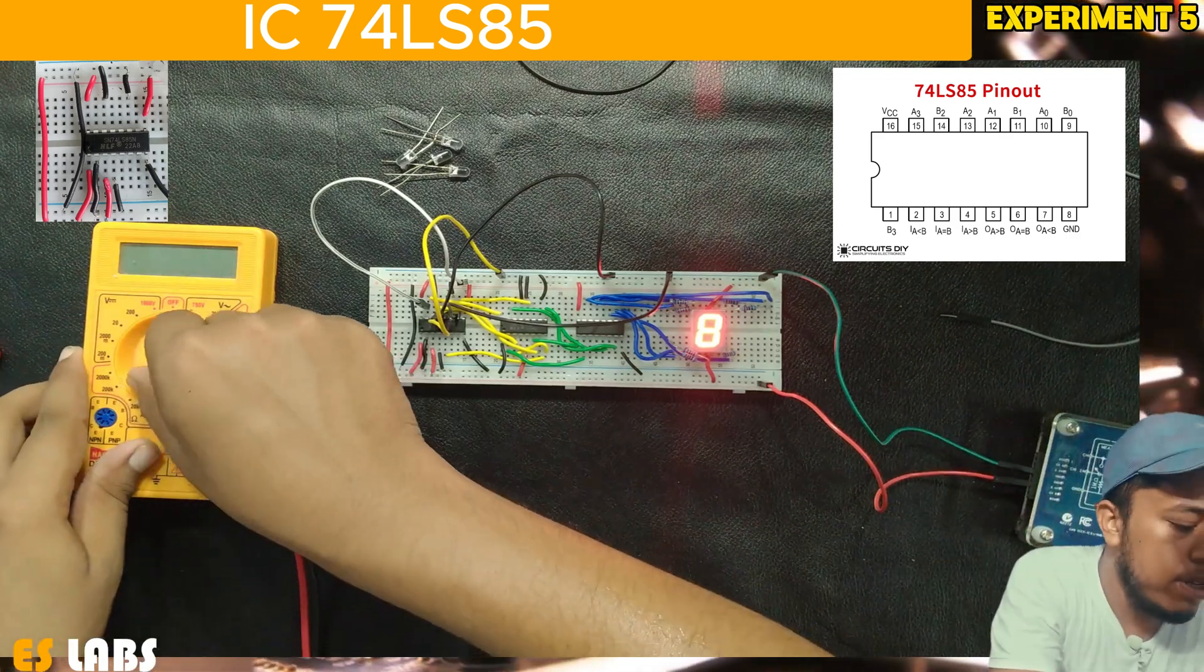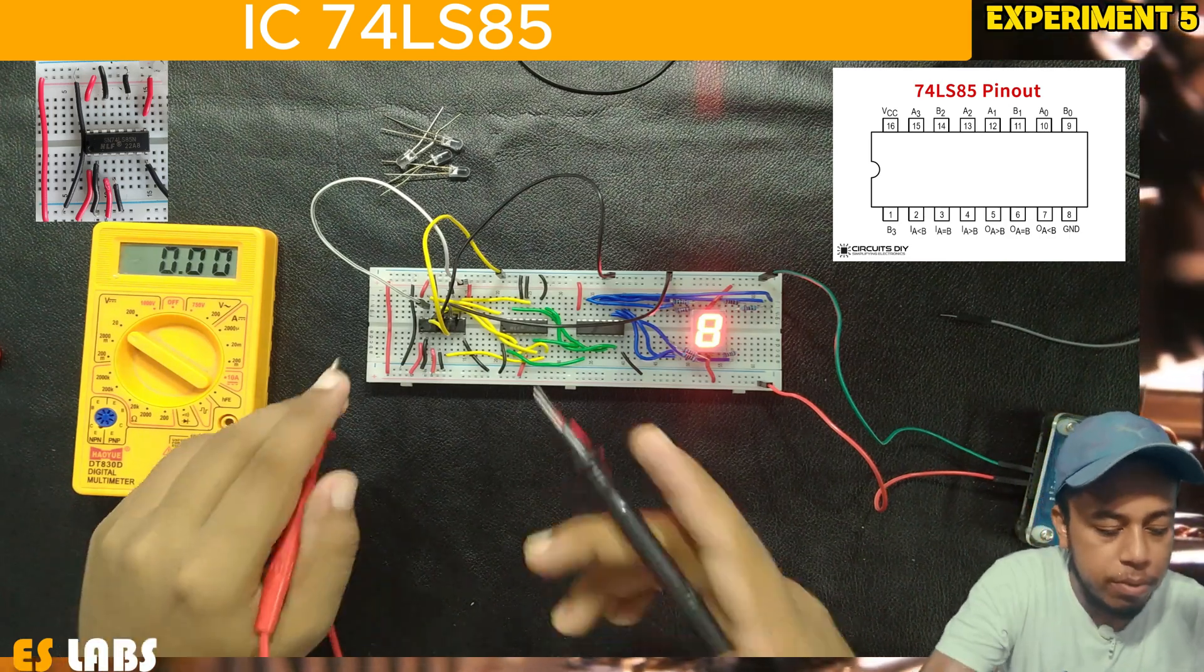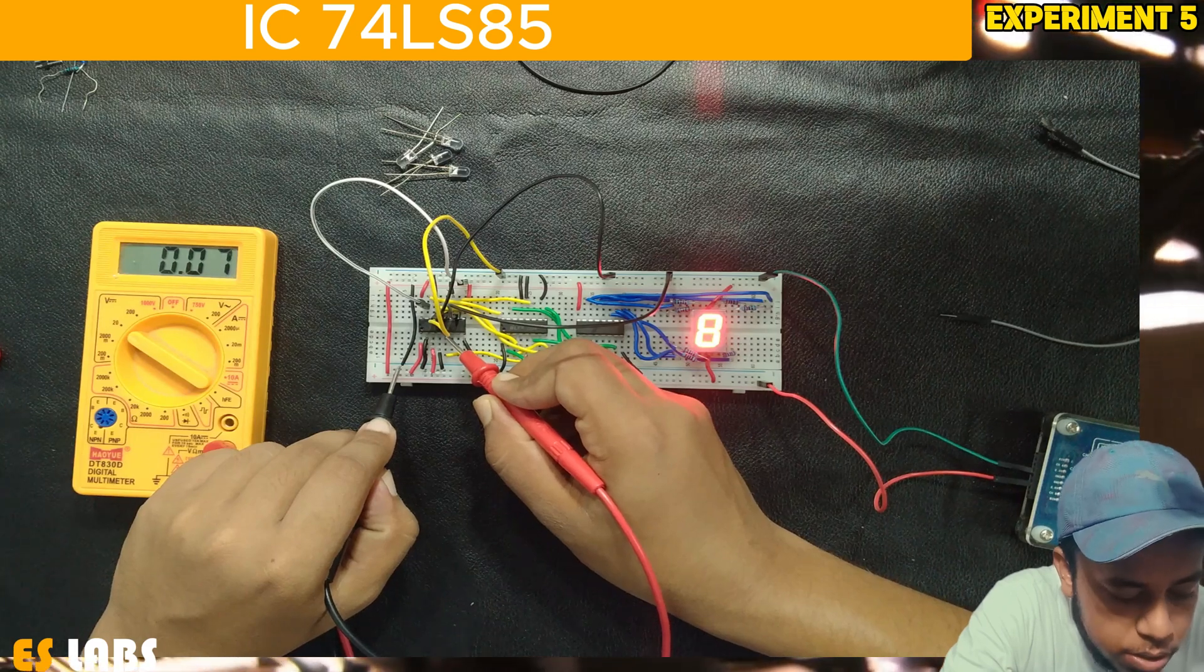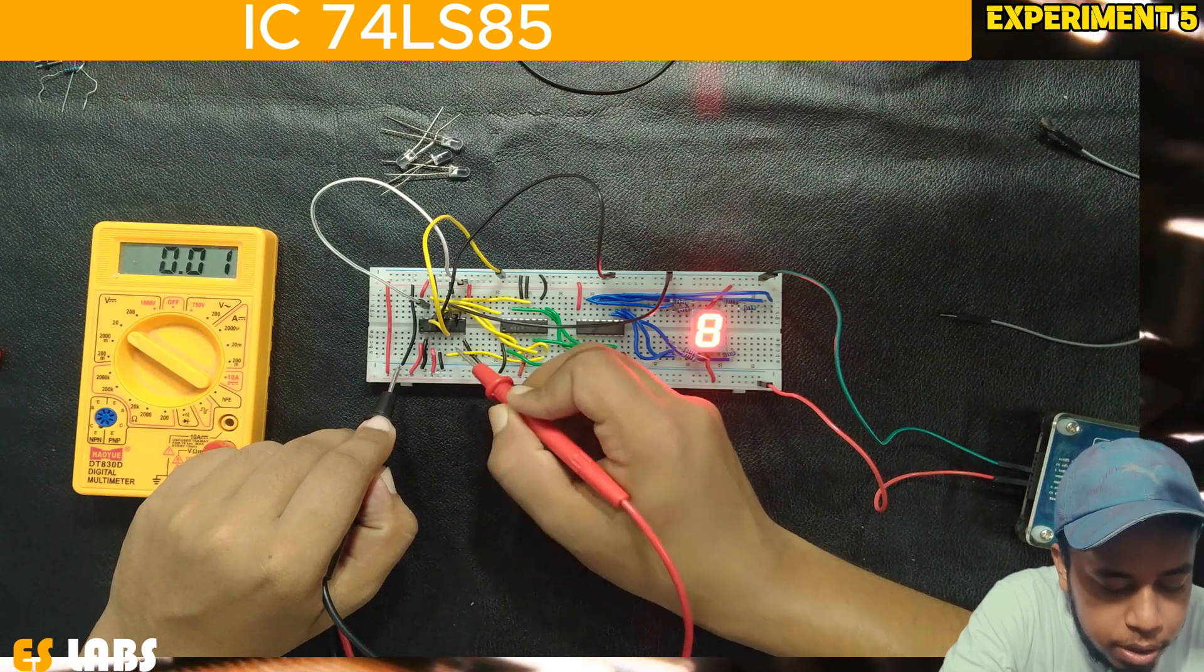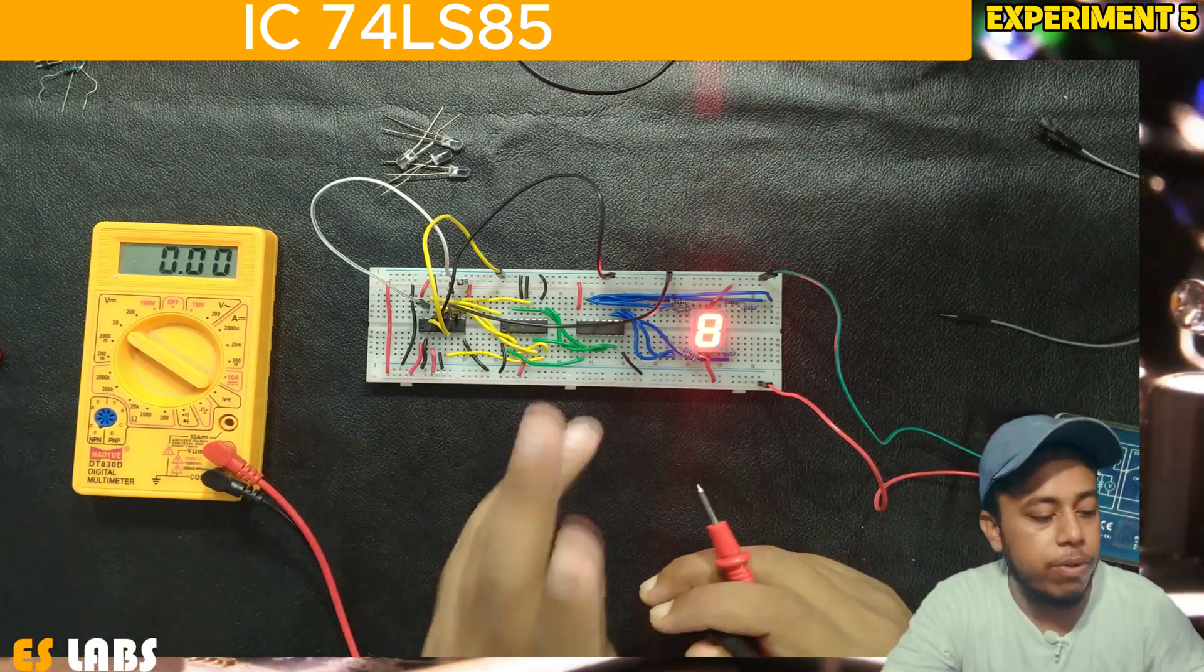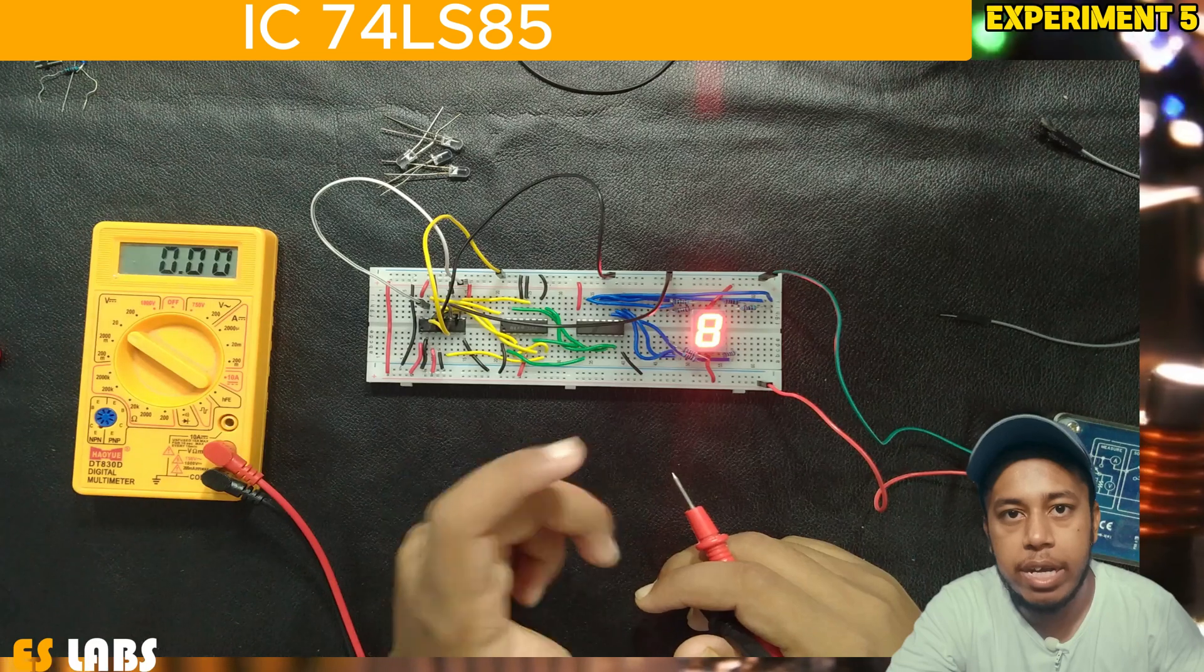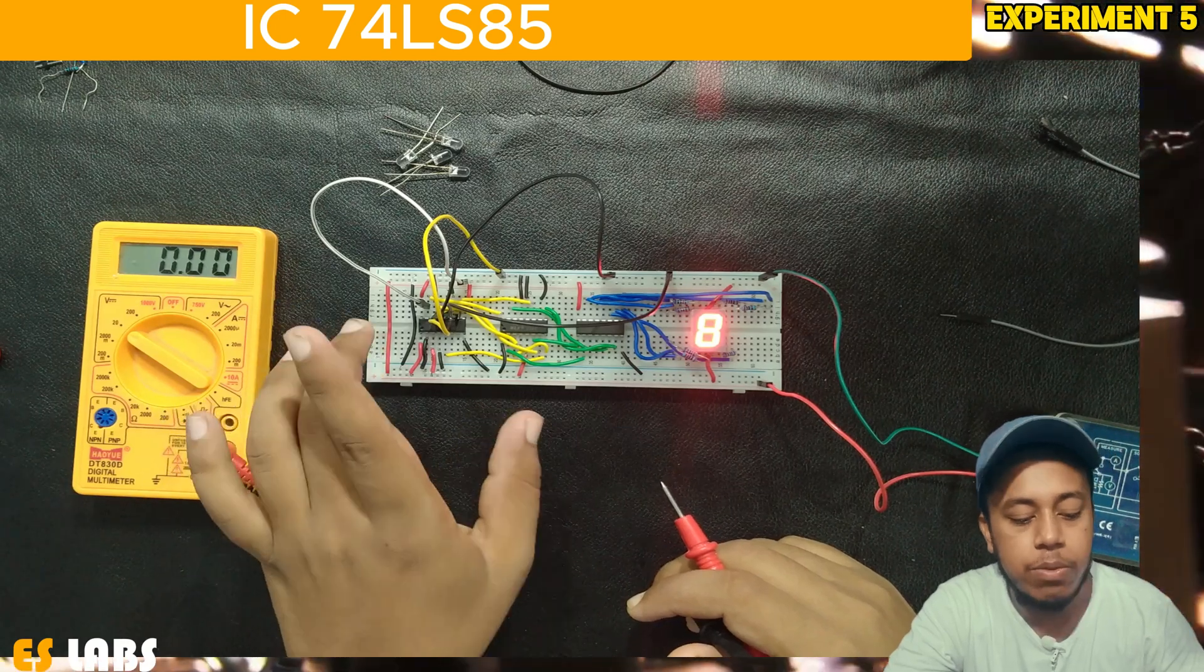Now we take our multimeter and set it to 20 volt. First we measure voltage at pin 5 which is A greater than B, this is 0 volt. At pin 6, this is also 0 volt. At pin 7 it is showing 5 volt indicating that A is less than B. So our A was 1000 which was 8 and B was 9. This ensures that our 74LS85 is working properly.